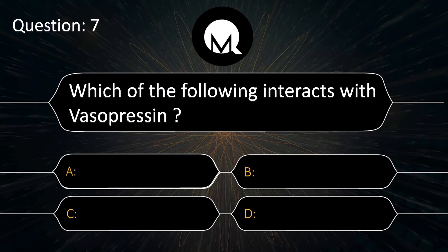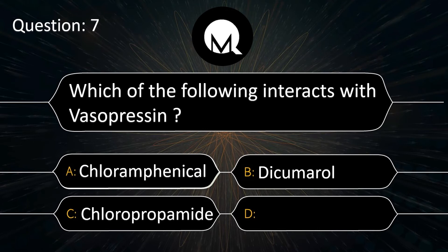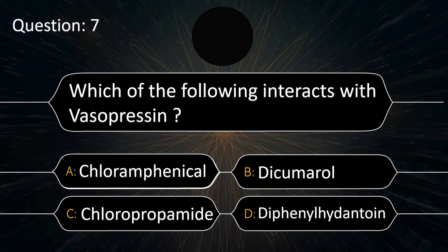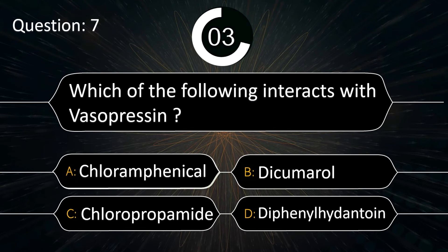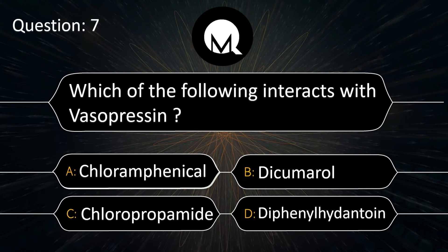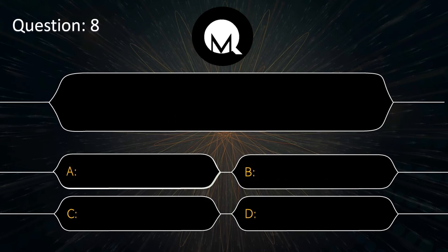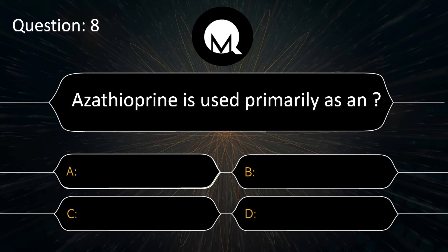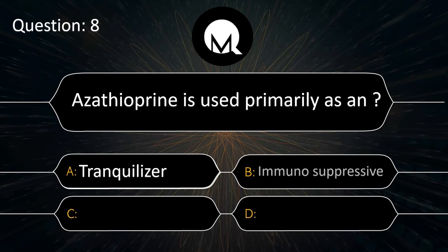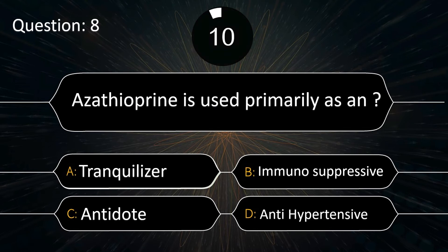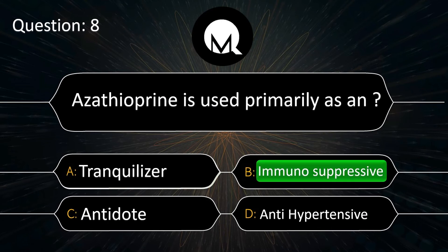Which drug interacts with vasopressin? Chloramphenicol, Dicumarol, Chlorpropamide, or Diphenylhydantoin? Azathioprine is used primarily as an immunosuppressive. The answer is immunosuppressive.